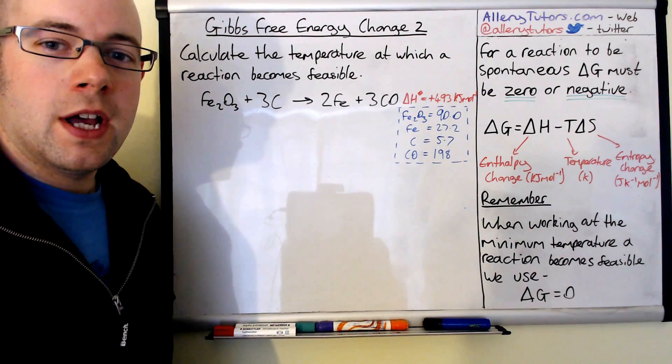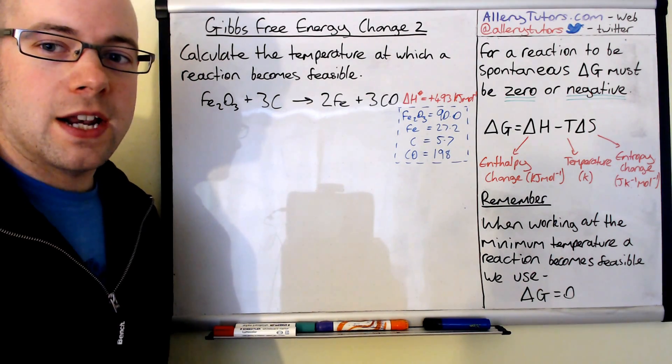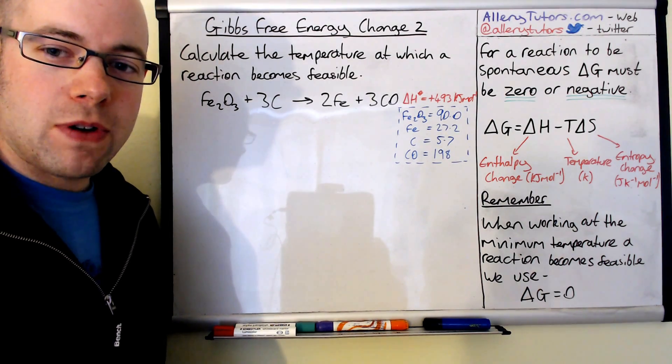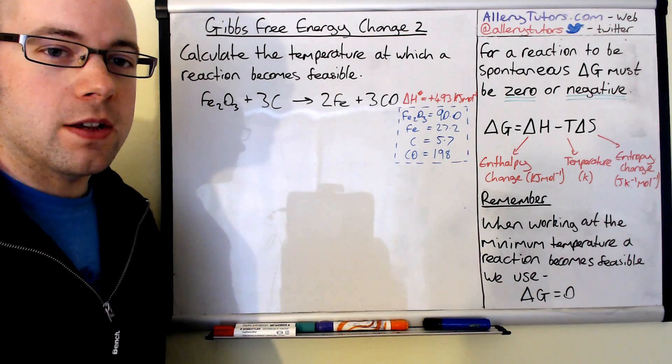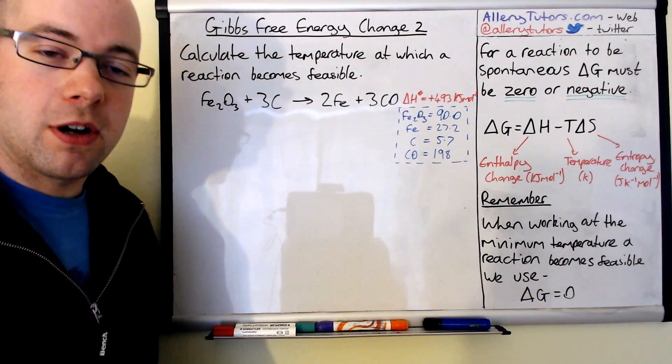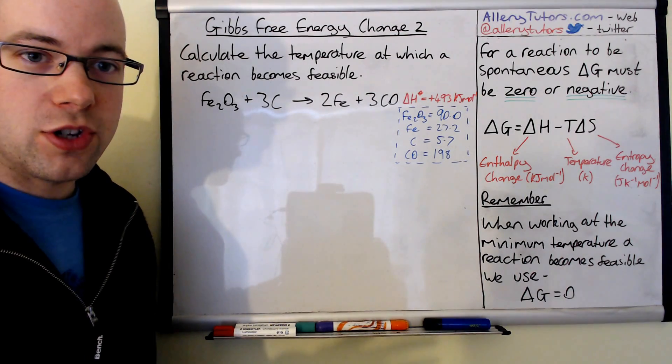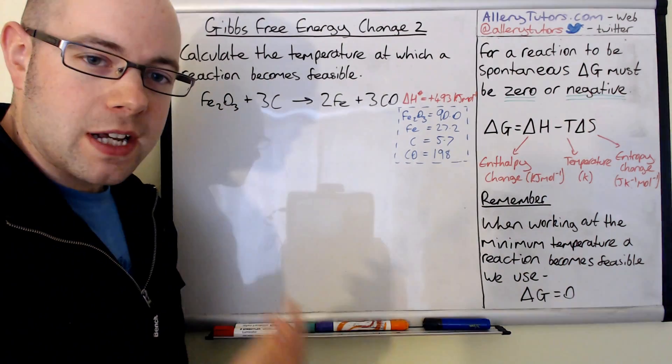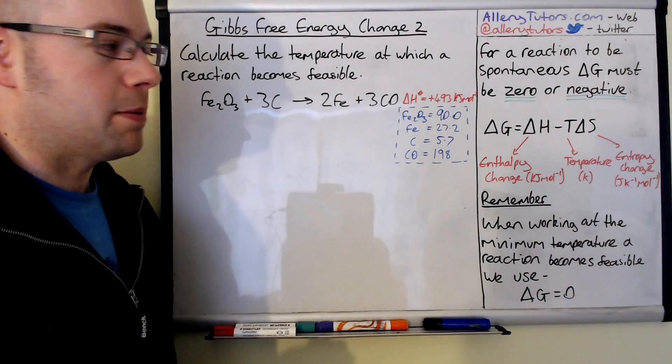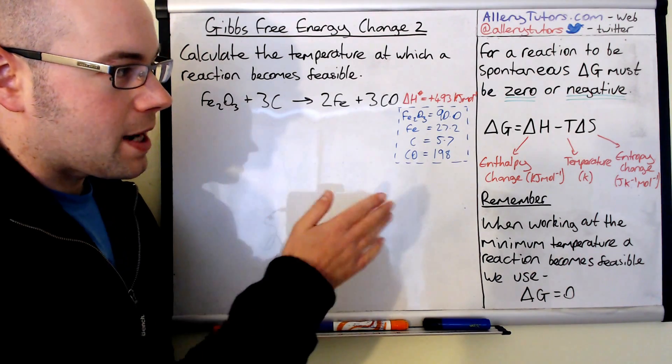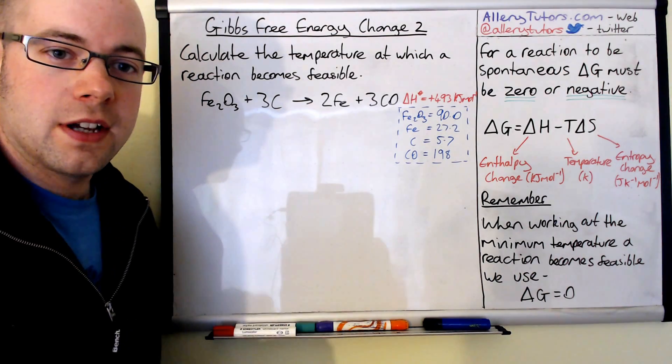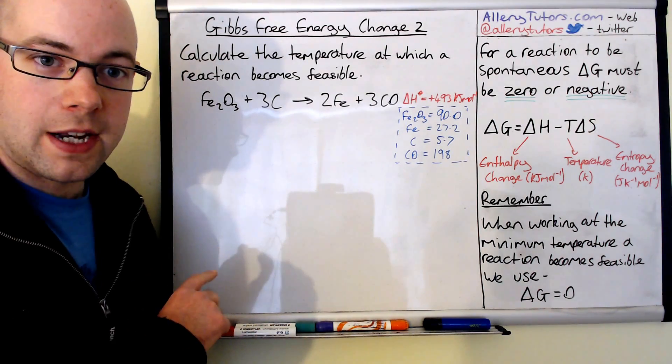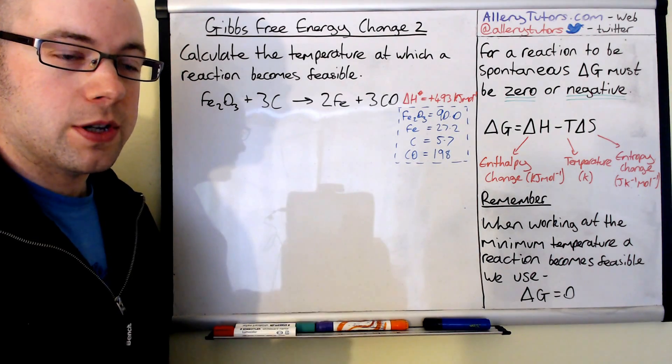Just a quick reminder, though. Remember for Gibbs free energy, for a reaction to be spontaneous, the delta G has to be zero or negative. The Gibbs free equation is delta G equals delta H minus T delta S, where delta H is the enthalpy change in kilojoules per mole, the temperature is always in Kelvin, and delta S is always in joules per Kelvin per mole. The units are really important here. When we do the calculation, you'll see why it's really important to make sure you know what the units are.